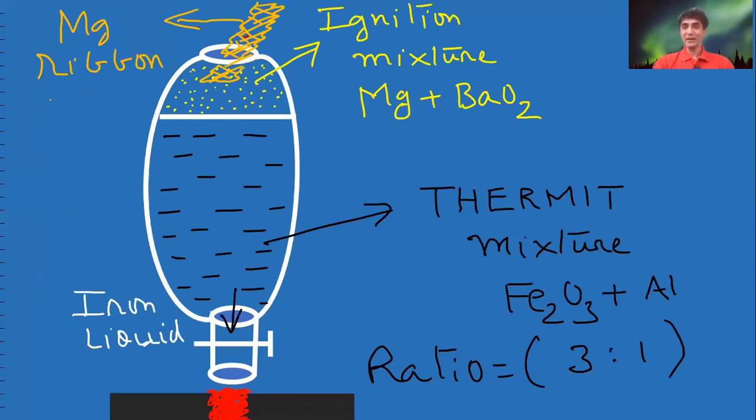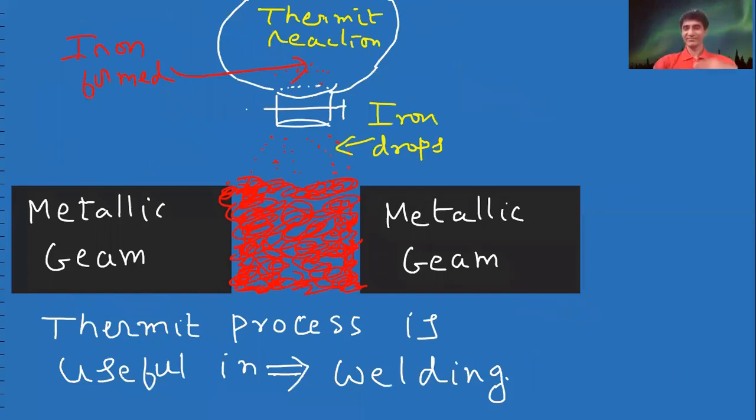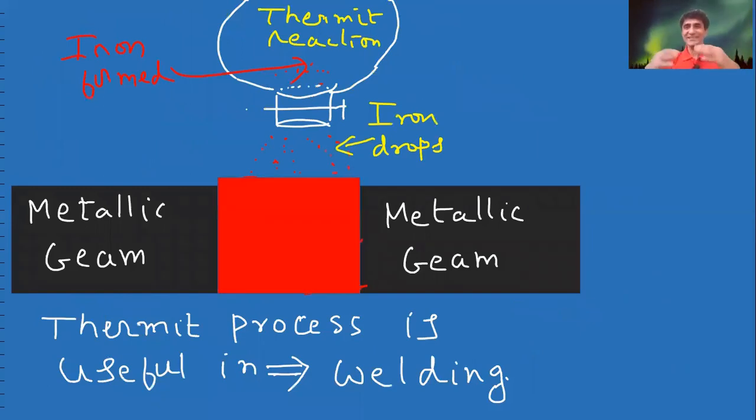What happens? Slowly, the iron beams will get attached. This is called welding process. So, thermite mixture plays a vital role in the welding process.